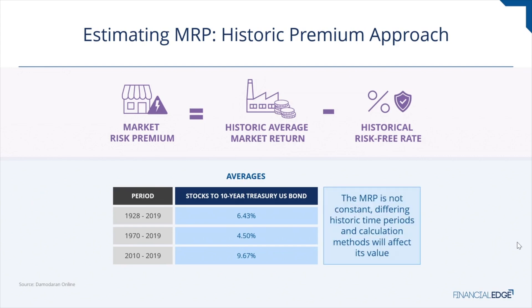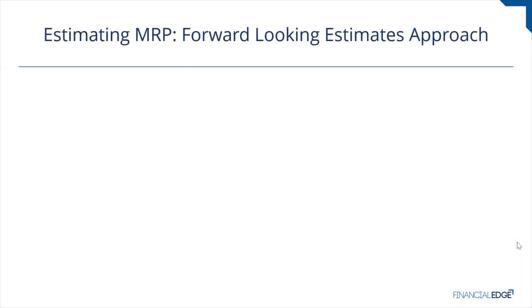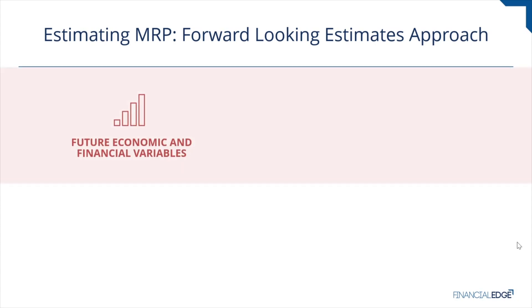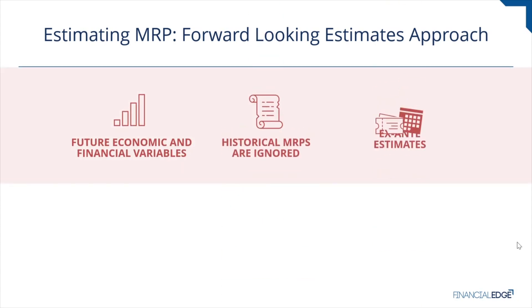The choice of time periods has trade-offs. Longer periods give more data points, so a common choice is to use the longest reliable return series available. However, many will question whether data from the 1920s is really relevant in today's market. Estimating market risk premium can also be based only on expectations of future economic and financial variables, with historic MRPs ignored — these are also called ex-ante estimates.